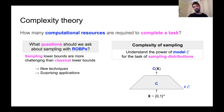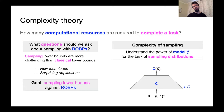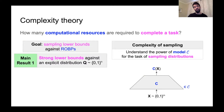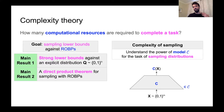Our goal is to obtain sampling lower bounds against ROBPs. We have two main results in this direction. Our first results are very strong sampling lower bounds against a meaningful explicit distribution. Our second main result is a so-called direct product theorem for sampling with ROBPs.